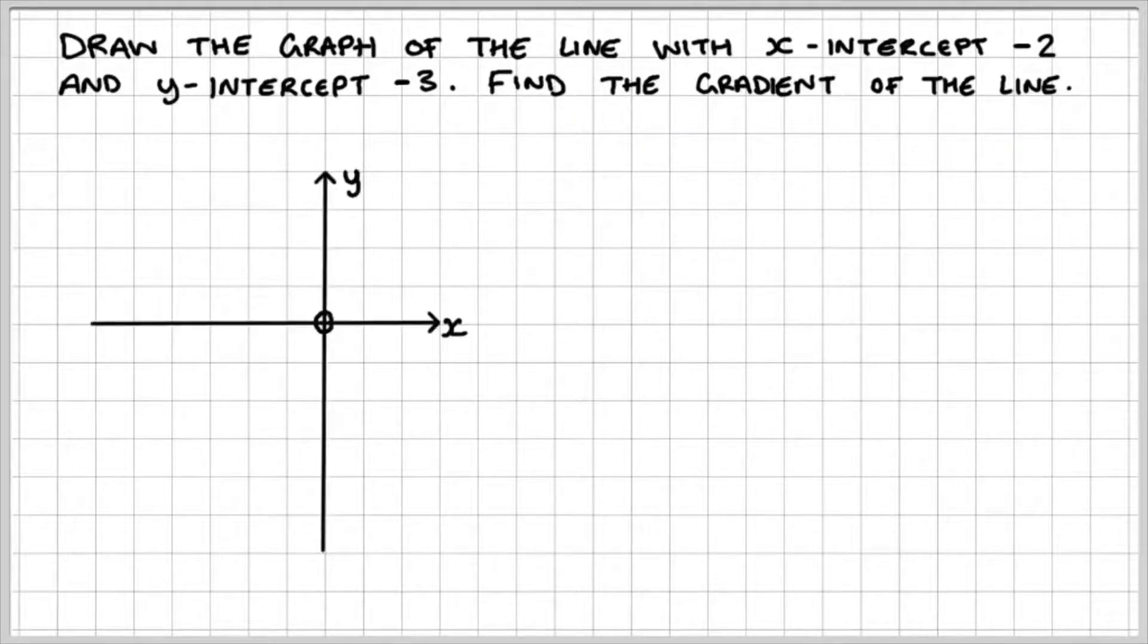So let's plot this on a grid. We've got our two points here and here. That's the point where we have the x-intercept at -2, and this is the point where we have the y-intercept at -3.